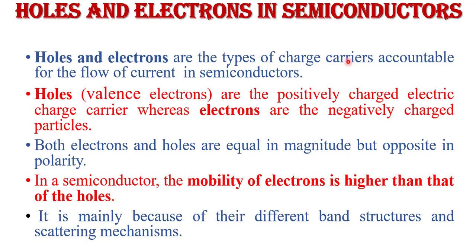Holes and electrons are the charge carriers responsible for the flow of current in a semiconductor. Holes are the positive charge carriers whereas electrons are the negative charge carriers. Both electrons and holes are equal in magnitude but opposite in polarity. In semiconductors, the mobility of electrons is higher than the mobility of holes.